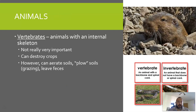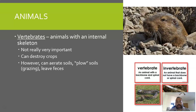The first animals we'll talk about are vertebrates — animals with an internal skeleton. They're not very important in soil terms and can actually be pests that destroy crops. Where they do contribute is aerating soils and plowing them through grazing, which creates a disturbance that kick-starts the succession process. In leaving their feces, they also help start the decomposition process, giving other organisms something to feed on.